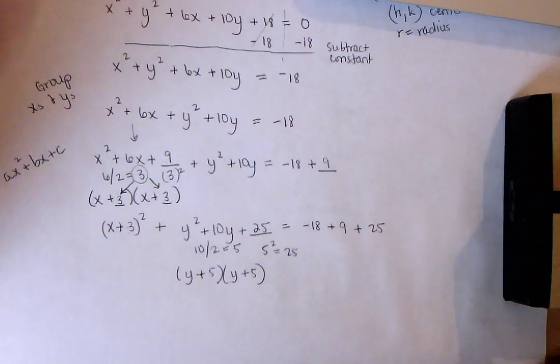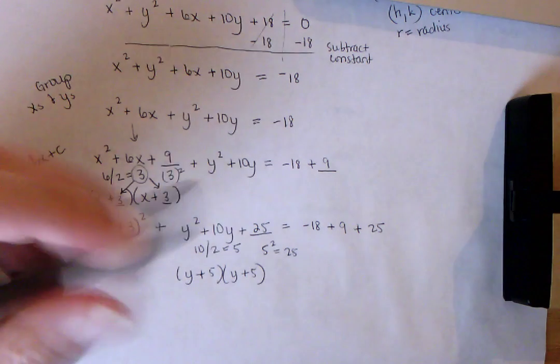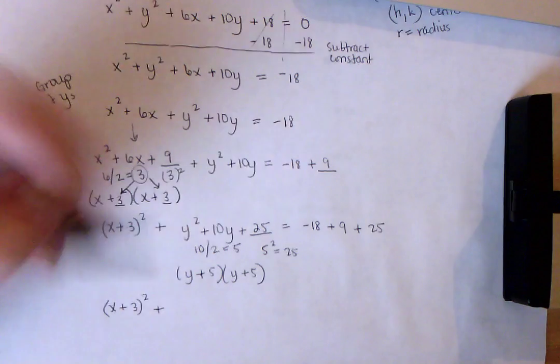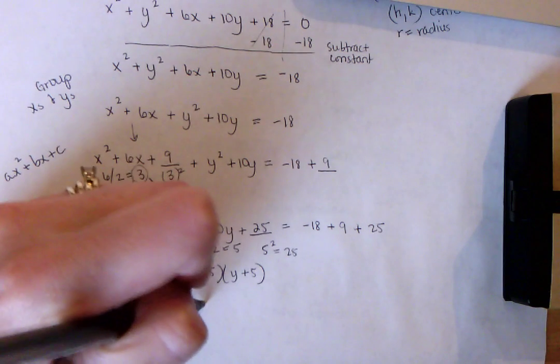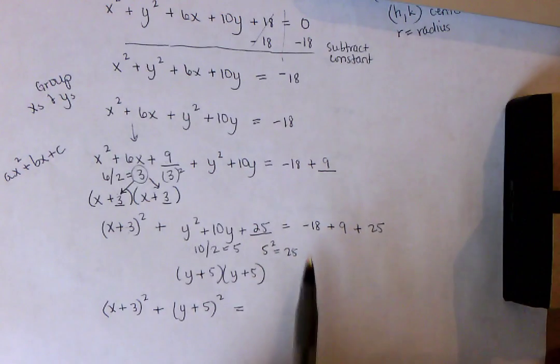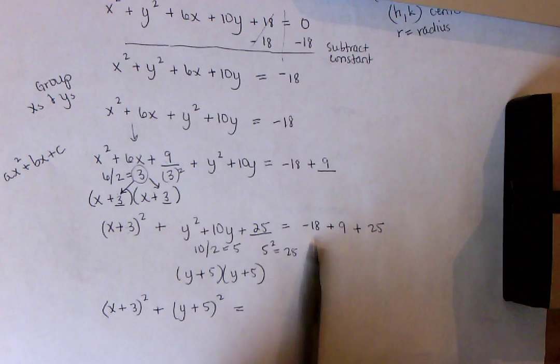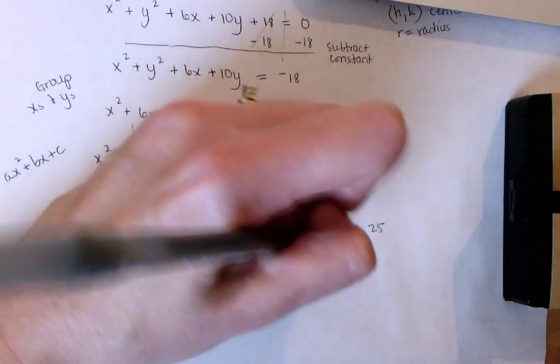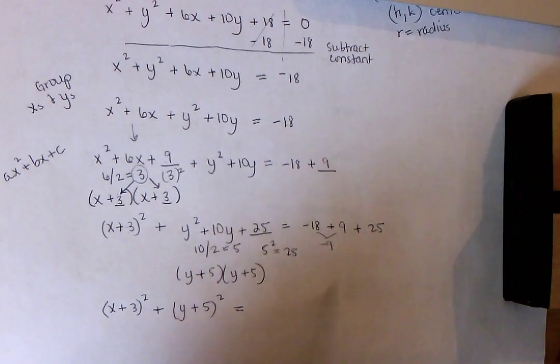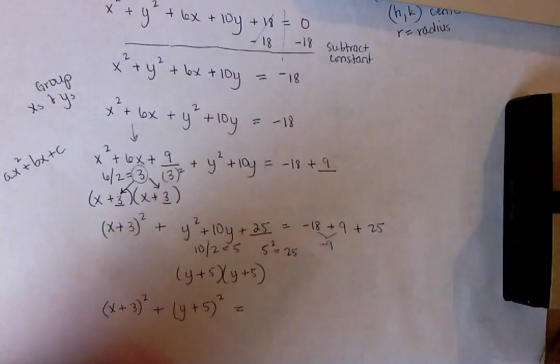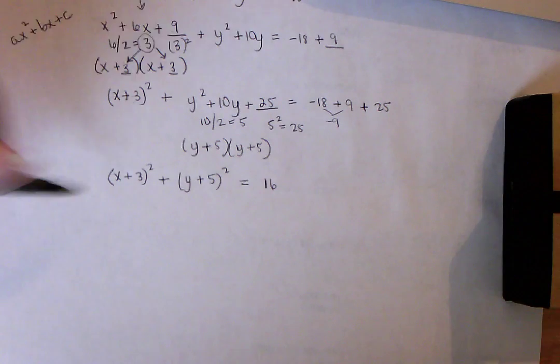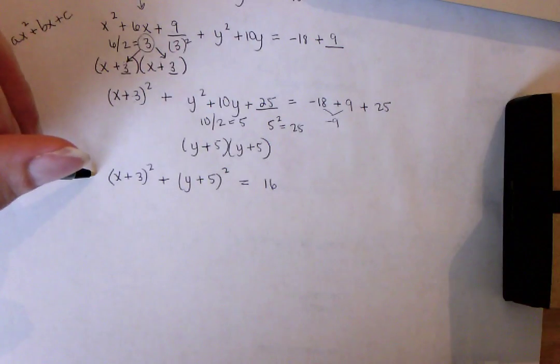So now we're pretty much ready to go. We're just going to rewrite this, just like we did this one here, we rewrote it instead of x plus 3 times x plus 3, we rewrote it as x plus 3 squared. We're going to do the same thing here, we're going to do y plus 5 squared. And then all we have to do on the right side is just combine these right here. So negative 18 plus a positive 9, those are opposites, so that's going to be a negative 9 right there because the bigger one's negative. And then if we combine these two together, we're actually going to get 16. 25 minus 9 is 16. So now we have just completed the square to put our equation into the standard form, this is standard form.